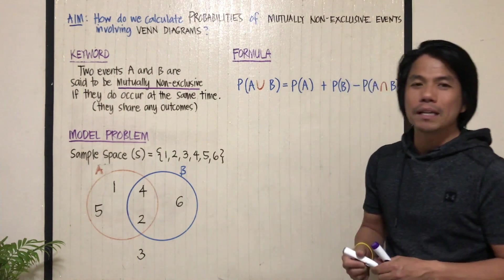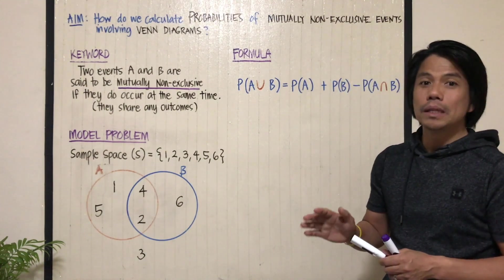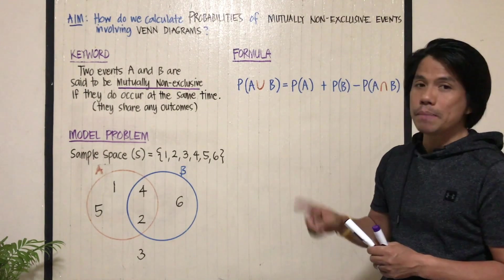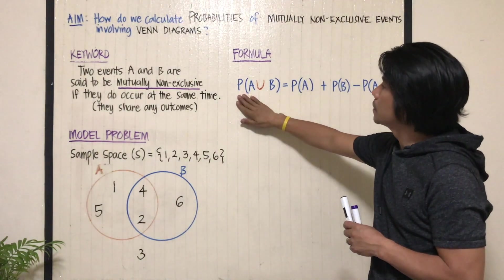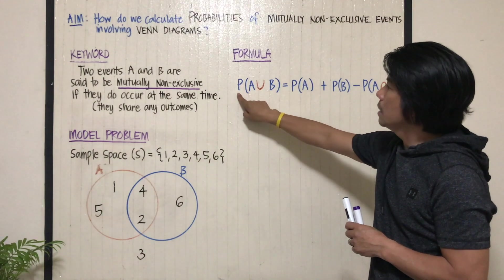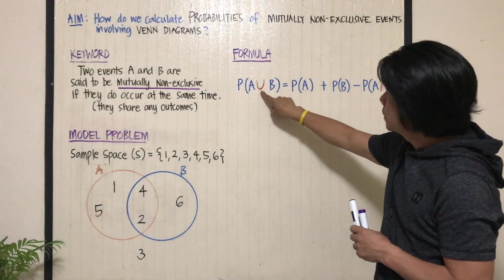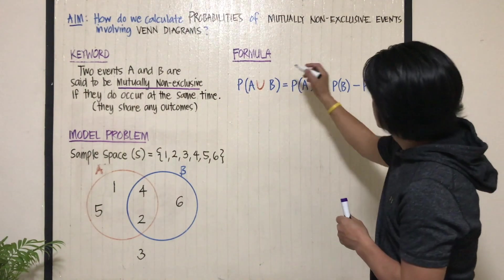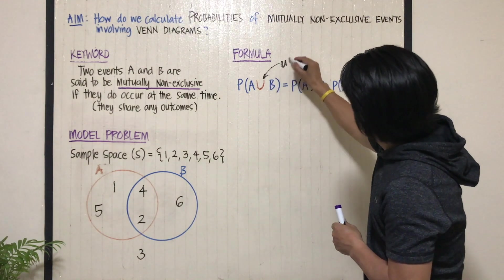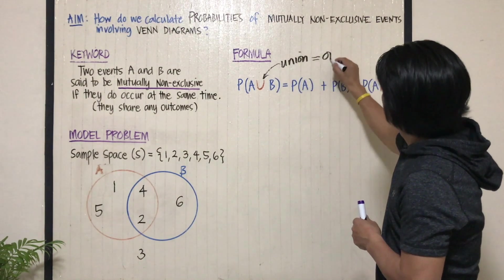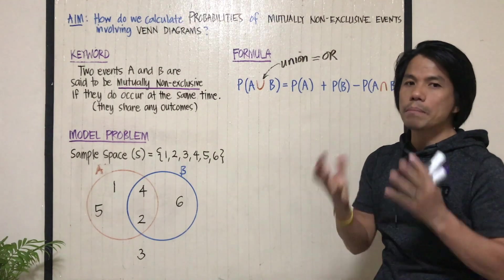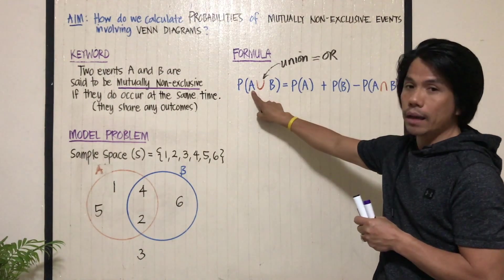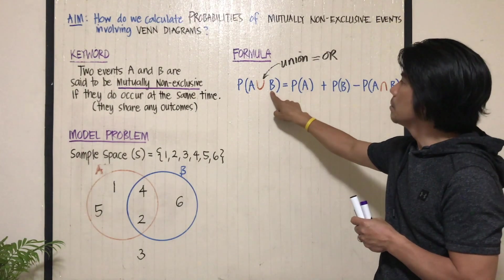How do we find the probability of mutually non-exclusive events A and B? That probability is represented by P of A, and you see this symbol? That means union. Sometimes they read it as or, meaning it's a combination of event A or B.